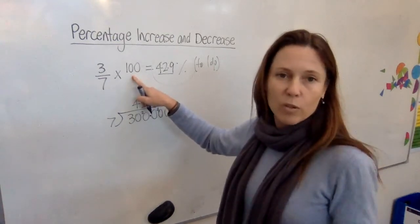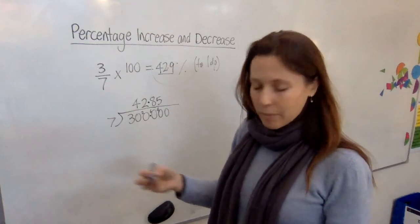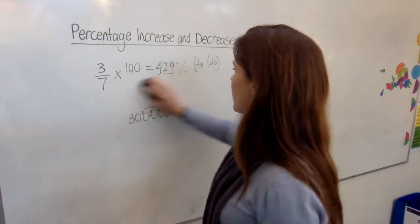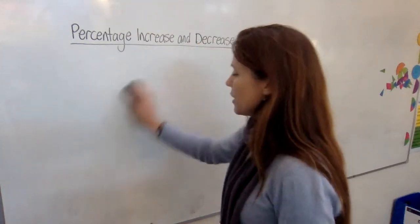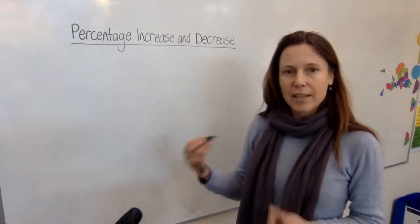So, this is a method that's going to work all the time. Multiply by 100, and then divide by what's down here. All right, so now we know how to convert fractions into decimals. How do we work our increase and decrease as a percentage?